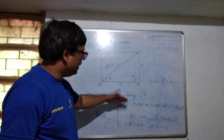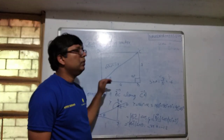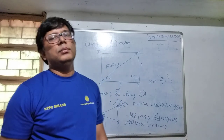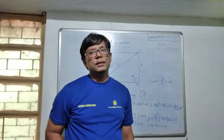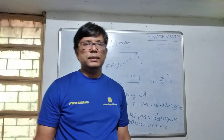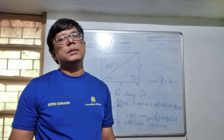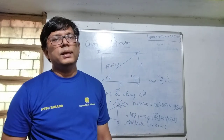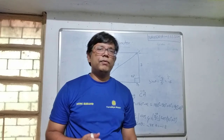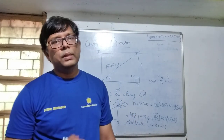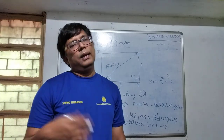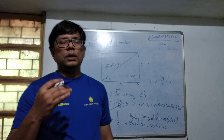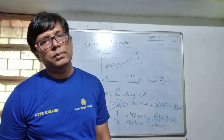The component of a vector along another vector can be positive, negative, or zero. When the first vector makes less than 90° with the second vector, the component is positive. When the first vector makes exactly 90°, the component is zero. When the angle is between 90° and 180°, the component is negative.